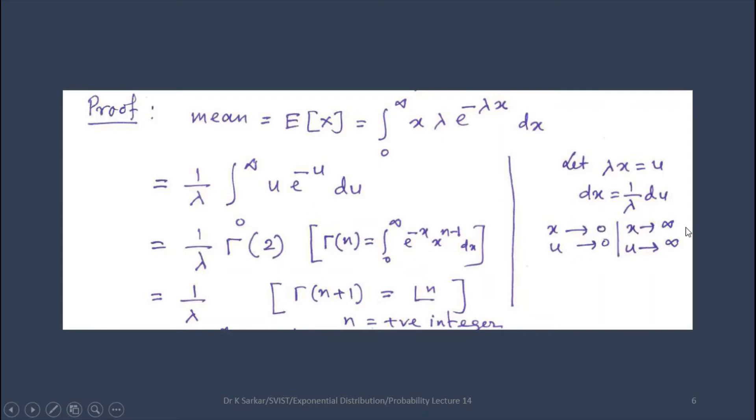When x tends to infinity, u tends to infinity. Now, let us substitute lambda x as u and put dx as 1 by lambda du. 1 by lambda is outside the integration, and let us take the limits.